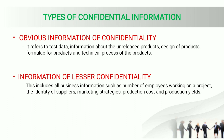There are two types of confidential information: obvious information of confidentiality and information of lesser confidentiality. Obvious confidential information includes all business information such as the number of employees working on a project, the identity of suppliers, marketing strategies, production cost, and production yields.